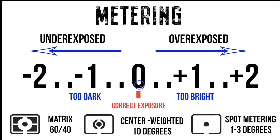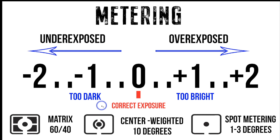The camera meters in a couple of different ways. The first is a matrix where it's 60-40, meaning it's taking in 60% of one area and 40% of another. This is what we call an average weighting system where it's looking at the whole scene — the most common method used in photography. The next is called center-weighted, using 10 degrees, so we're looking at just the center area.